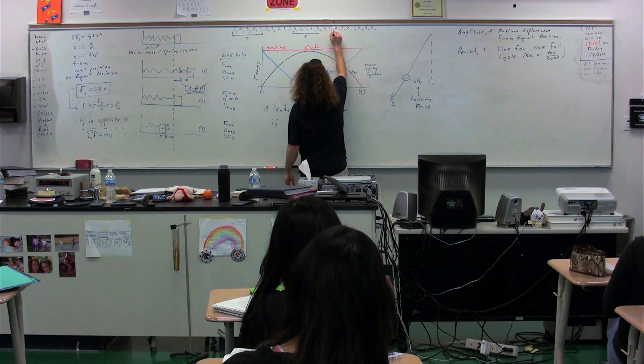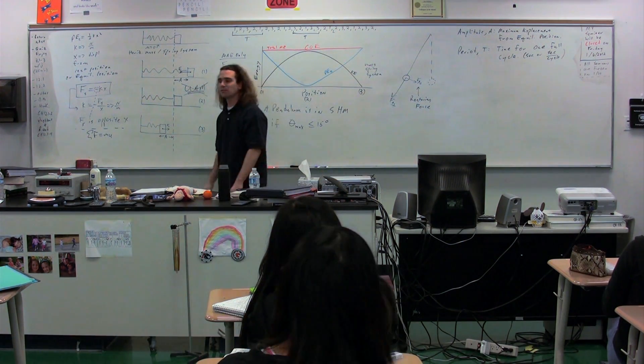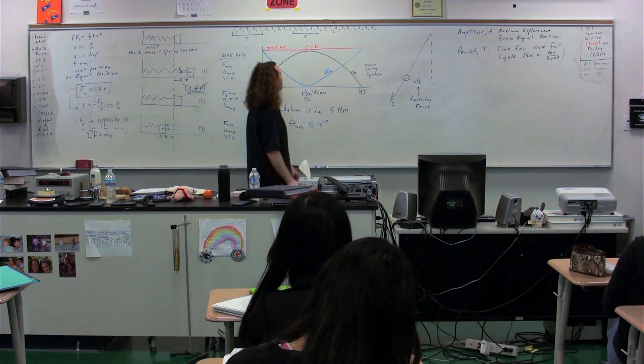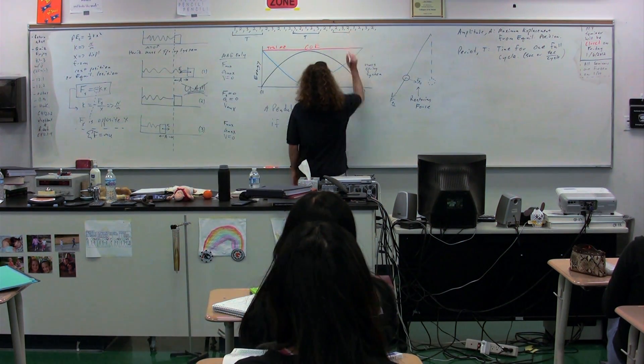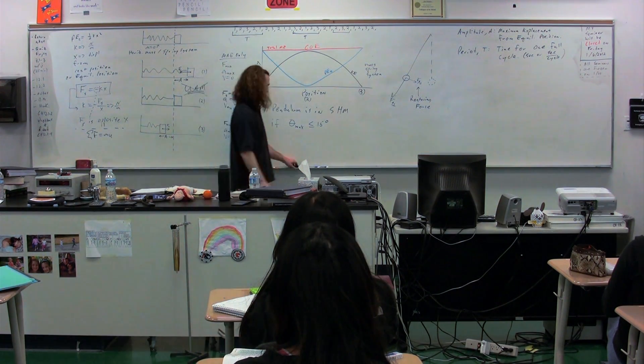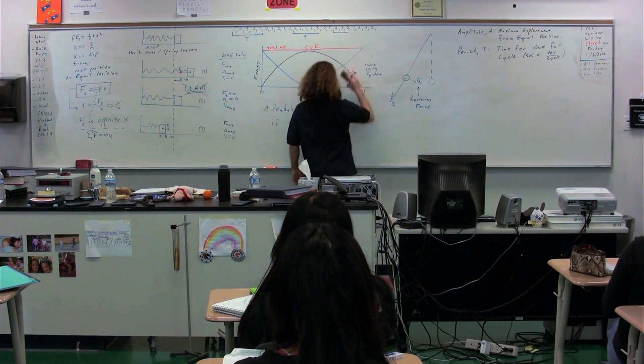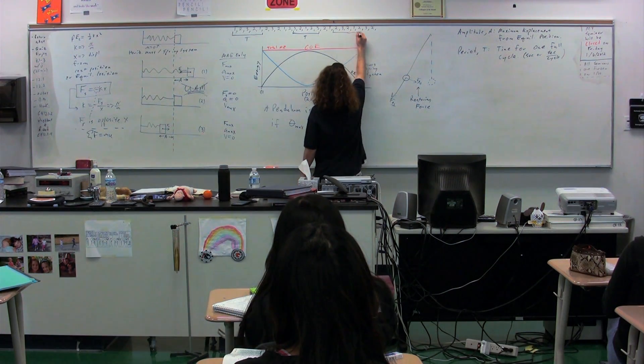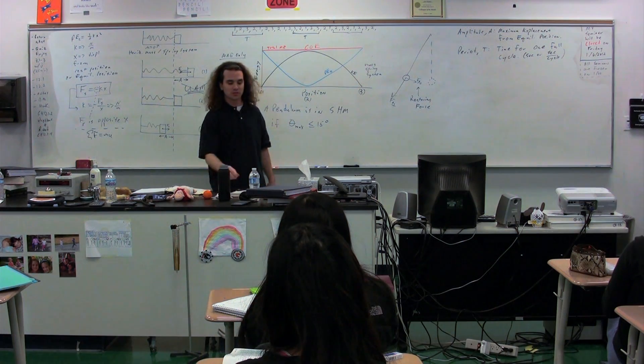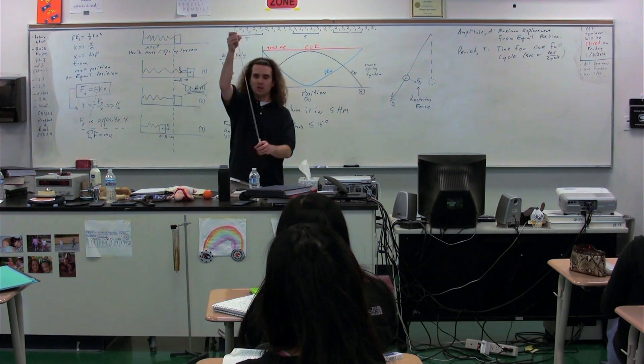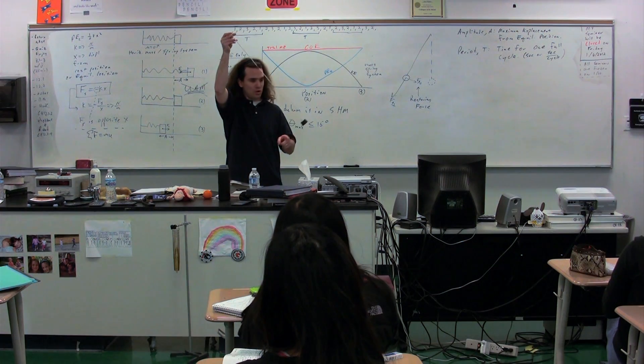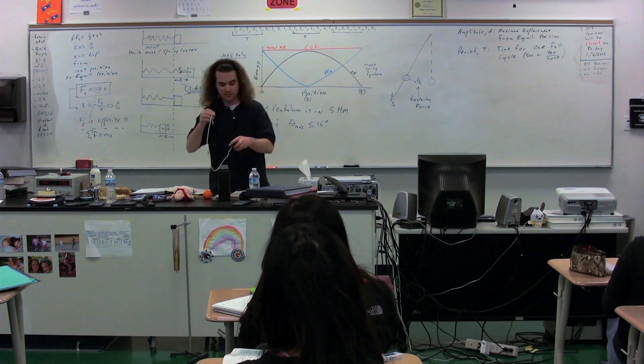If we start at position two, where do we end for one full cycle? Jess? One, two. No, the next two. Which is why I'm asking the question. Please notice, if you start at position two, you actually have to go back through position two, and then back to two again. So if instead we start at position two, it's going to go two, one, two, three, two, for one full cycle.